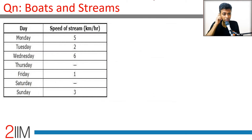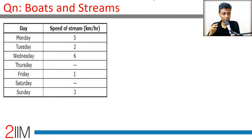Speed of the stream on different days: 5 km/h, 2 km/h, 6 km/h — note this is speed of stream, not still water speed — then 1 km/h, 0 km/h, and 3 km/h.